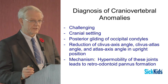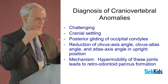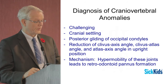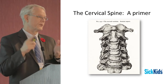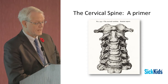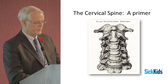The diagnosis of cranial vertebral anomalies is challenging. Cranial settling is a disorder diagnosed by the techniques Dr. Colby mentioned. The gliding of the occipital condyles — the connection between the skull and the first cervical vertebra — can be measured during flexion and extension movements. I want to provide a primer on how the spine actually works. At the very top is C1, called the atlas, and then the axis, which is C2.